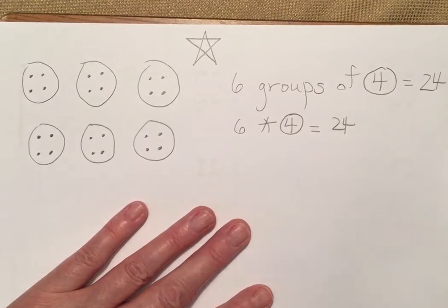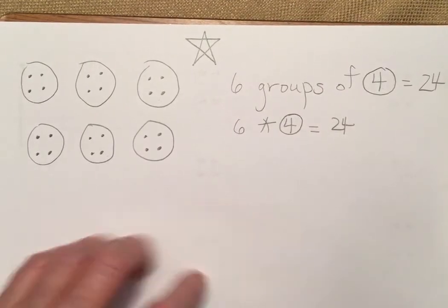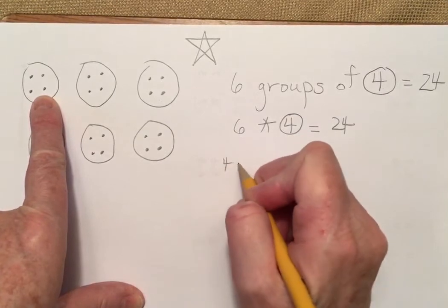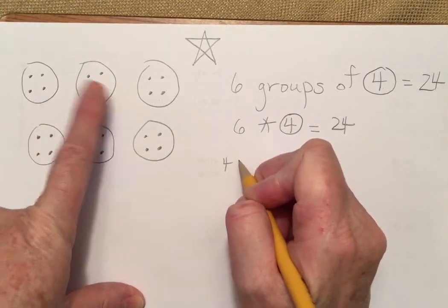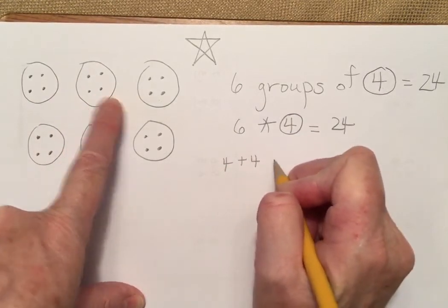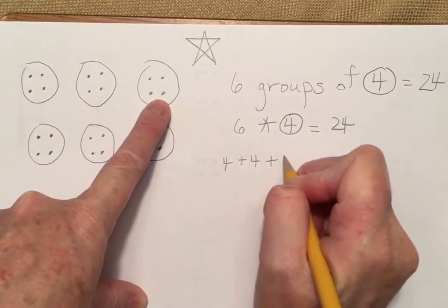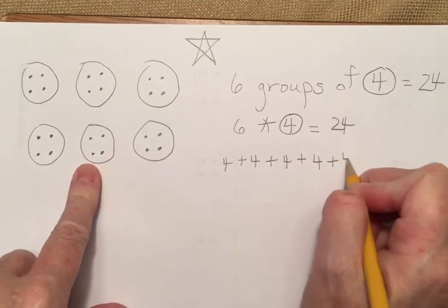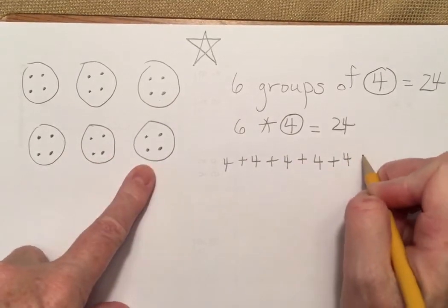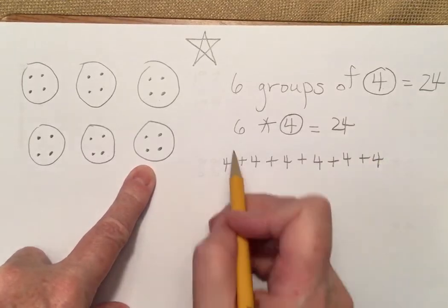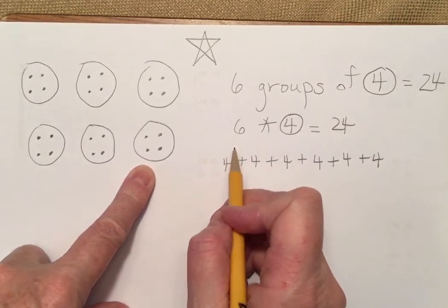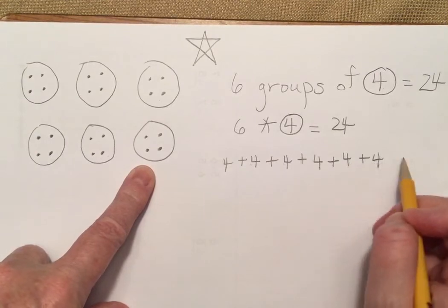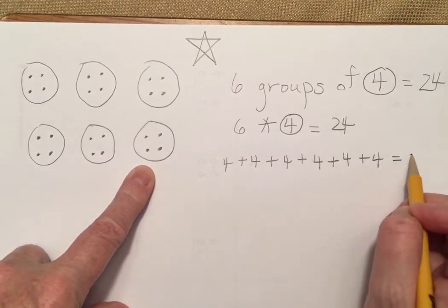Now we're going to write our repeated addition sentence. We have four plus four plus four plus four plus four plus four — there should be six fours. One, two, three, four, five, six. And that's going to equal 24.